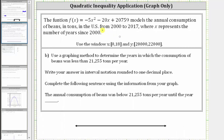If we graph this on the number line, we would have from zero to 12.2. We don't include 12.2 because that's when the consumption equals 21,255 tons, and we want strictly less than. The model is only valid starting in the year 2000 when x equals zero, so we include x equals zero and all values between zero and 12.2. Using interval notation, we have the interval from zero to 12.2 — with a square bracket on the left to include zero, and a parenthesis on the right to exclude 12.2.